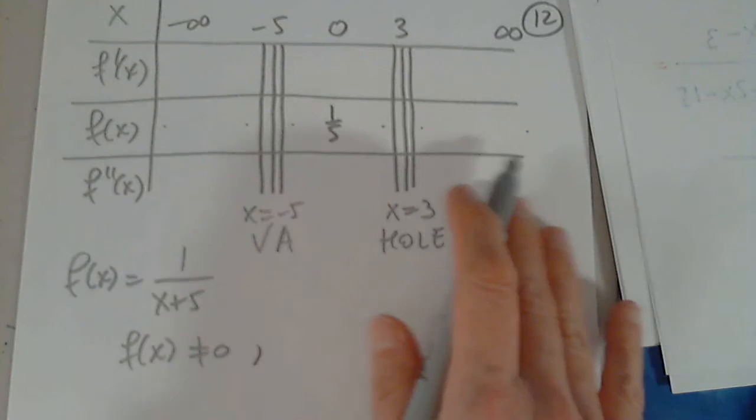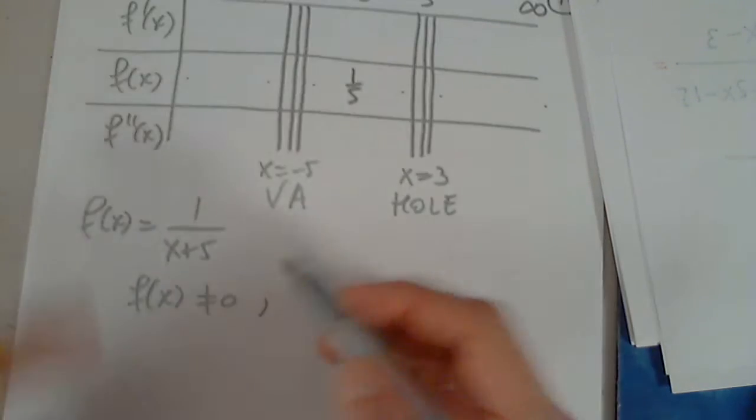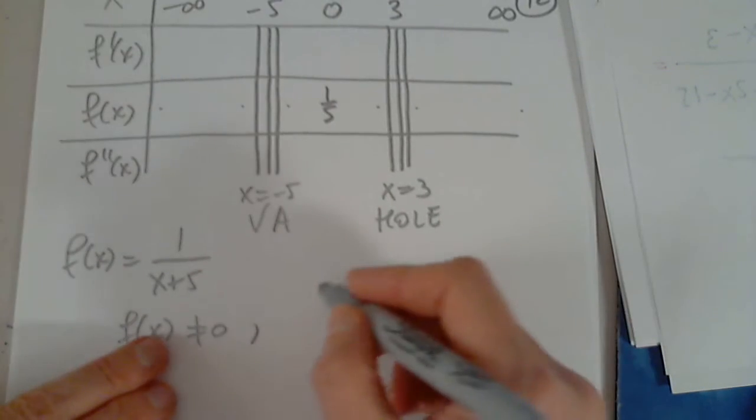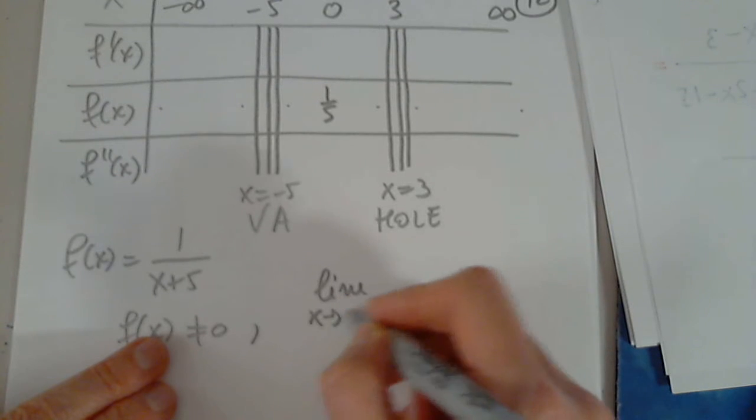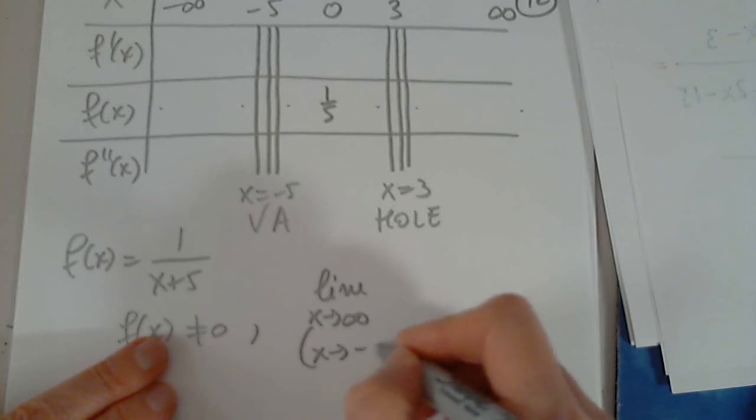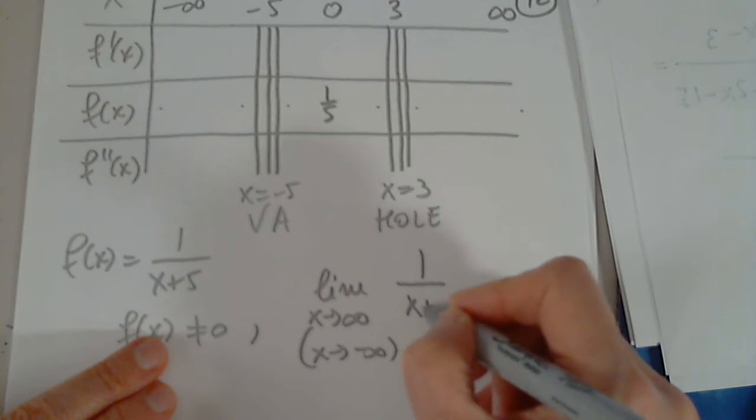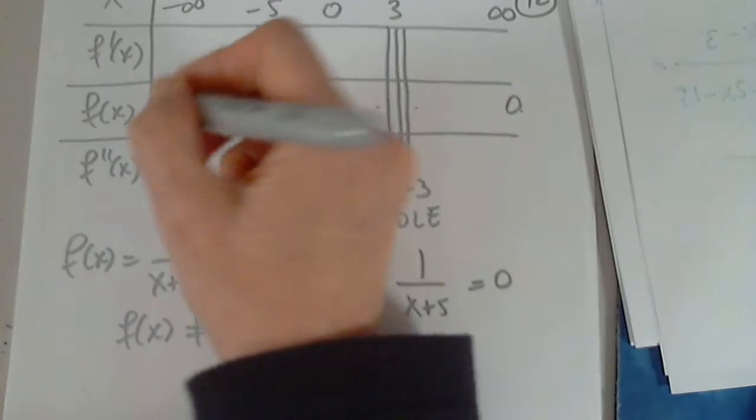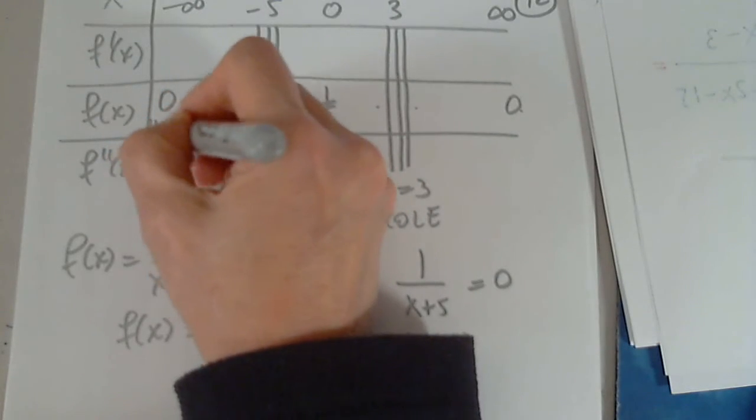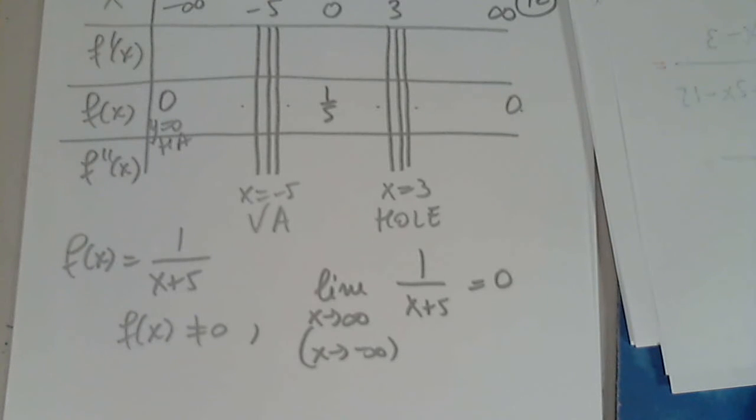But now I have to determine these limits. I know that when I calculate the limit as x approaches infinity or x approaches negative infinity from 1 over x plus 5, we know that this is 0. That makes y equals 0 a horizontal asymptote. I put everything in the table so I don't forget about anything.